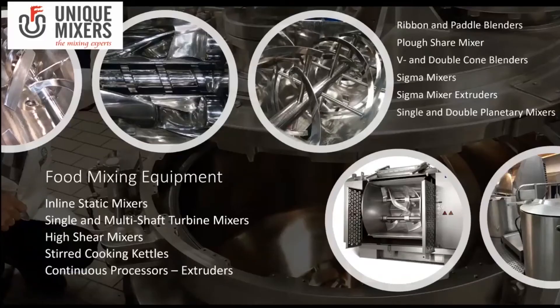There is a gamut of food mixing equipment available. You could be using ribbon and paddle blenders, plowshare mixers, V and double cone blenders, sigma mixers and sigma mixer extruders, single and double planetary mixers, inline static mixers, single and multi-shaft turbine mixers, high-shear mixers, stirred cooking kettles, and continuous processors and extruders. Given the variety of mixing equipment, materials, and applications, choosing the best mixing equipment for the application is definitely a challenge.